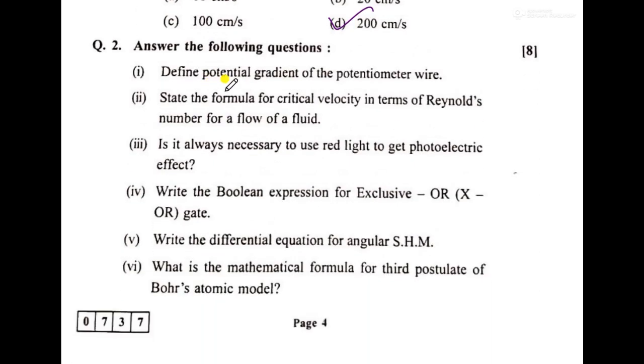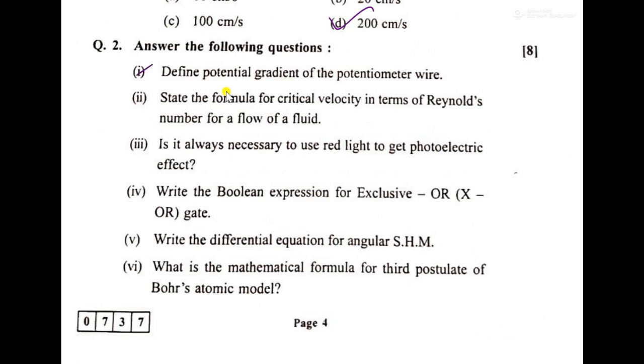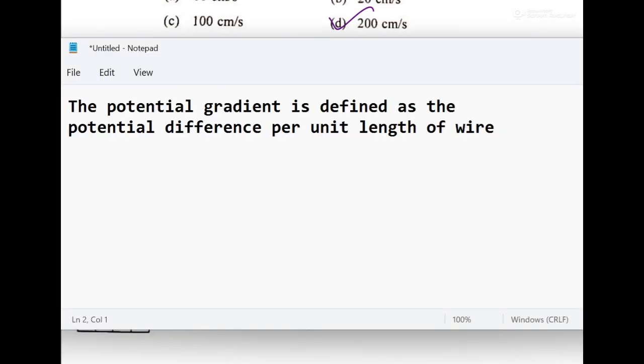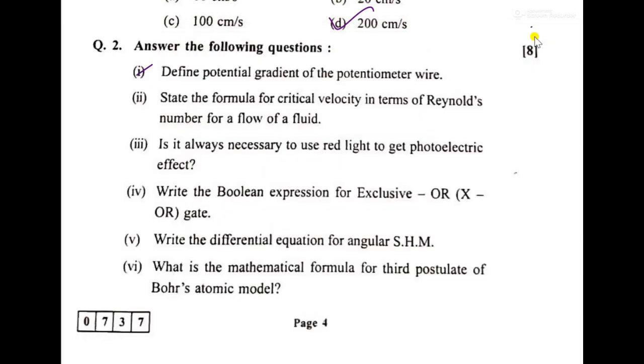Then the answer for this, answer the following, either one more formula, one line statement. The question has defined potential gradient, so the answer I have stated over here is that potential gradient is defined as potential difference V per unit length of the wire, that is V by L.